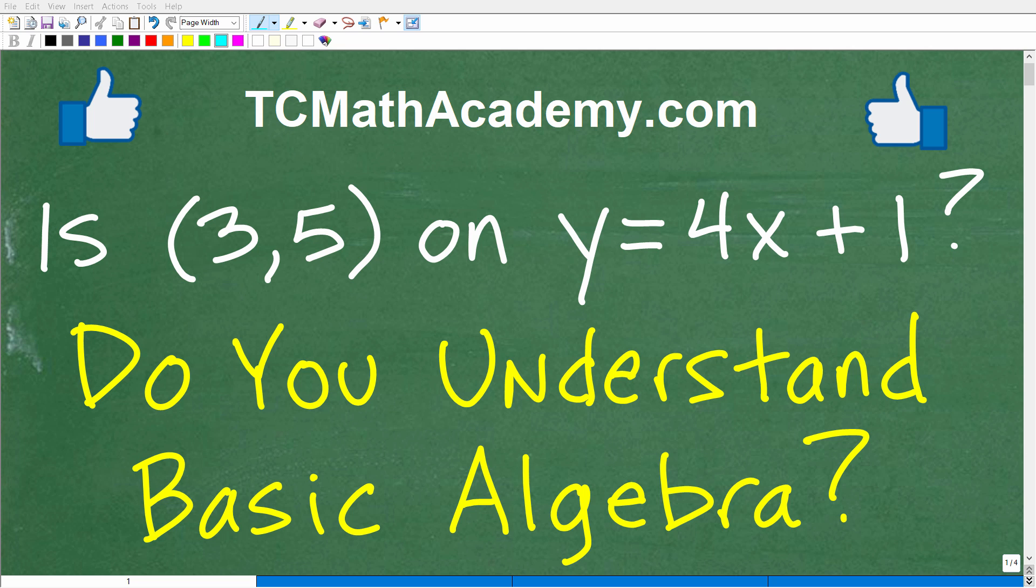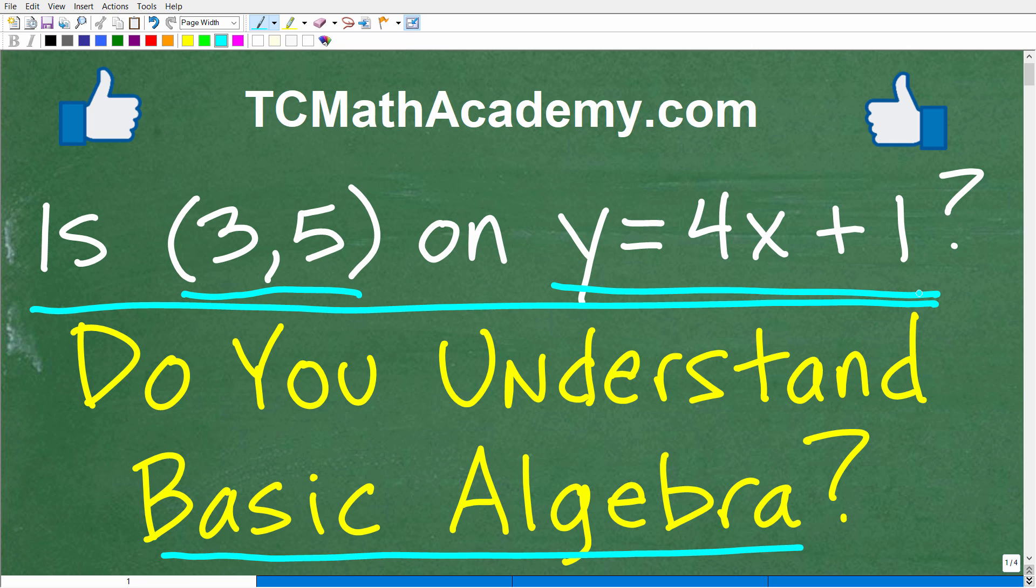Okay, so if you have a basic understanding of algebra, then this should be a very easy question. So the problem is the following: Is the point (3,5) on the line y equals 4x plus 1? Now, if you're looking at this and you have no idea what's going on, no worries. I'll explain exactly how to answer this question. Again, this is extremely important for those of you that want to understand algebra and not difficult.